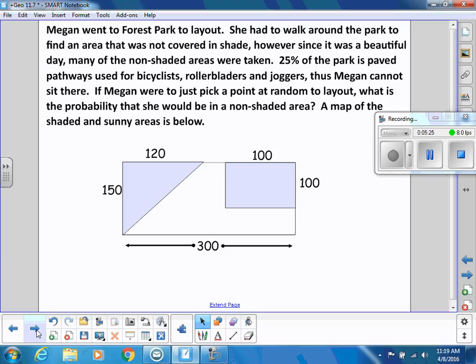So Megan's in Forest Park, and she's going to lay out and get some sun. She was walking around and wants to find an area that's not in the shade, but a lot of those parts were taken, and 25% of the park is paved. So it comes down to this diagram. If she picks a point at random, what is the probability that she would be in a non-shaded area? Anything in this diagram that's white we're considering non-shaded, and anything that is blue or light blue or gray is the shaded area.